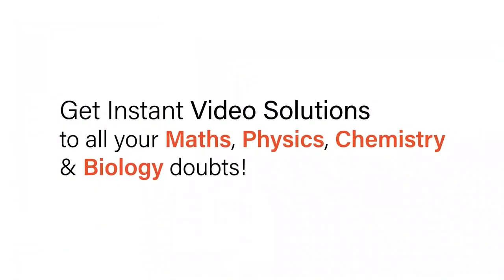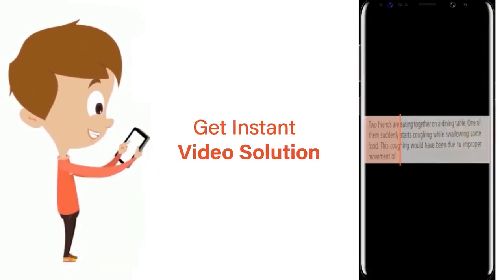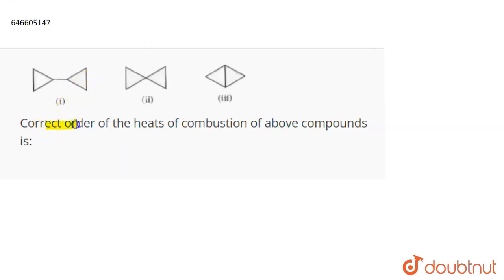With Doubtnut, get instant video solutions to all your maths, physics, chemistry and biology doubts. Just click the image of the question, crop the question, and get instant video solution. Download Doubtnut app today. The question is: the correct order of the heats of combustion of the above compounds is?